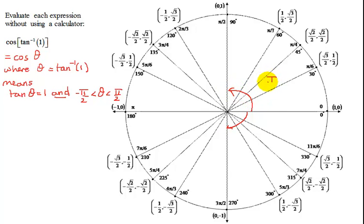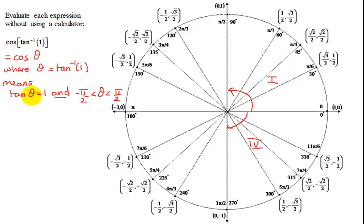So I'm restricted to angles that lie between negative pi over 2 and pi over 2. I can be in quadrant 1 with a positive angle, or if I'm in quadrant 4, I have to rotate in the negative direction. I know the tangent of theta is 1, and the tangent is positive in quadrant 1 but negative in quadrant 4. Therefore, I have to be in quadrant 1, and I need to find some angle in quadrant 1 whose tangent equals 1.